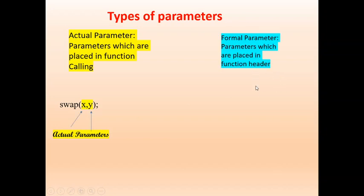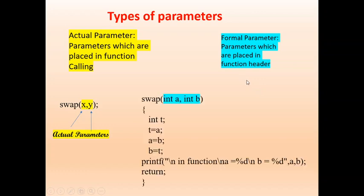Next, formal parameters. Parameters which are placed inside the function header are known as formal parameters. Consider the swap function definition: swap(int a, int b). Here, a and b are known as formal parameters because they are placed inside the function header.